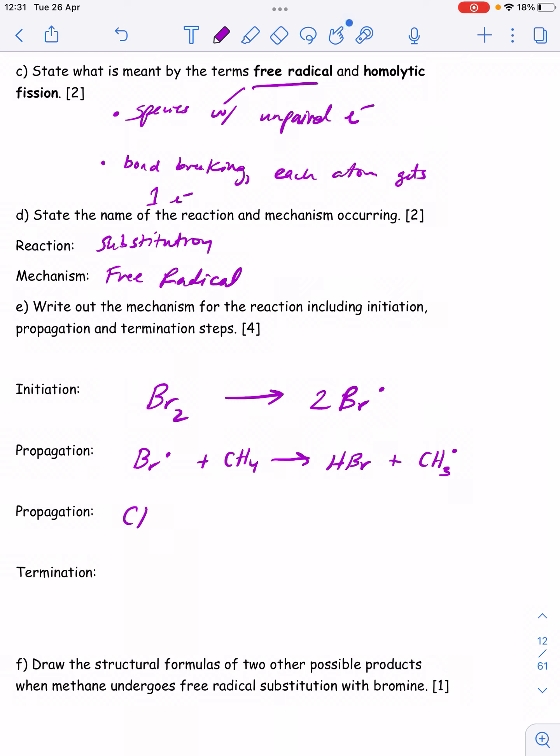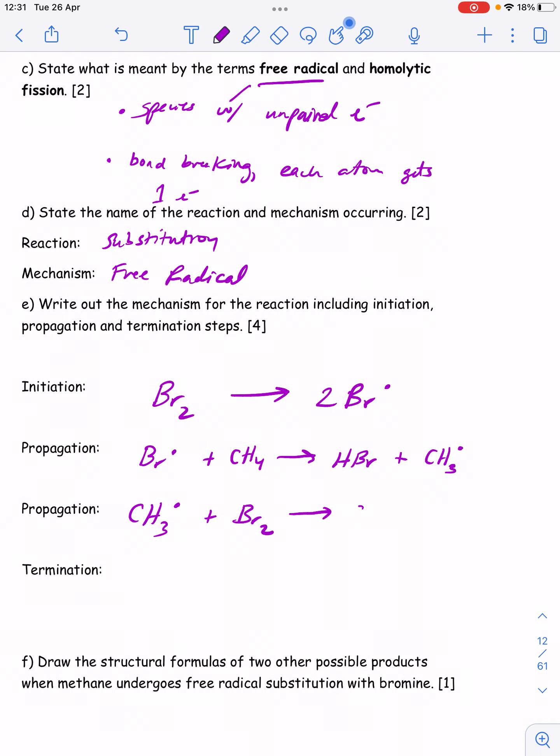The second propagation step: take the radical formed in the first one and show it reacting with another Br2 molecule, because realistically there would be more than one bromine molecule in the reaction container. The radical created by the first propagation step goes on to react with yet another bromine molecule. That's going to rip the bromine molecule in half to form the halogenoalkane we said we were going to form, and leaves behind one bromine atom as another radical. We're right back where we started, and this could go on and on until you run out of one of your reactants.